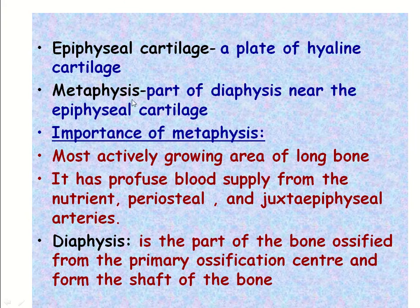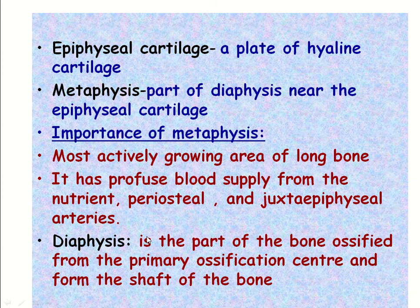The epiphysial cartilage is a plate of hyaline cartilage. The metaphysis is the part of the diaphysis near the epiphysial cartilage. This area is very important because it is the most actively growing area of the long bone. It has profuse blood supply from the nutrient, periosteal, and juxta-epiphysial arteries. The diaphysis is the part of the bone ossified from the primary ossification center and forms the shaft of the bone.